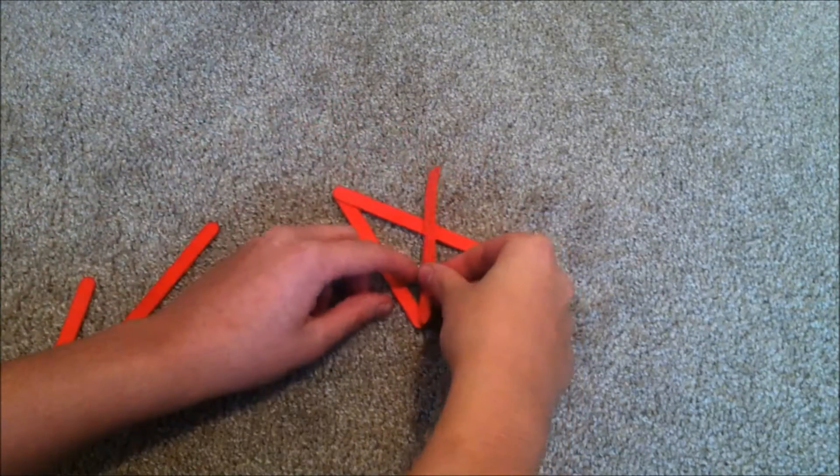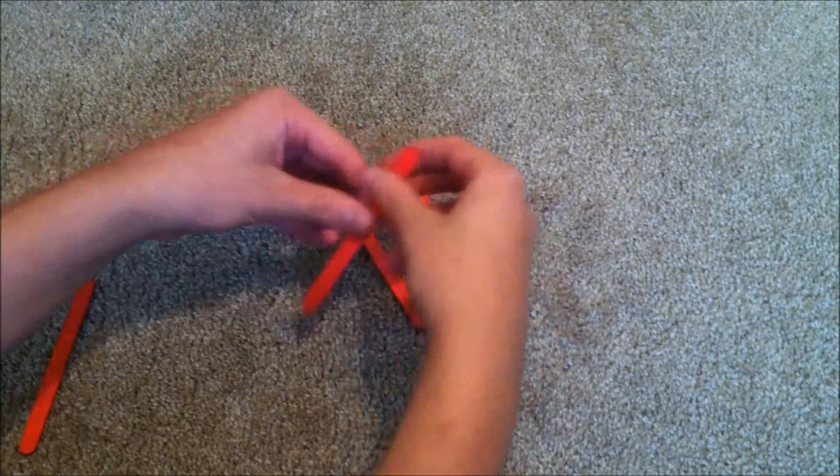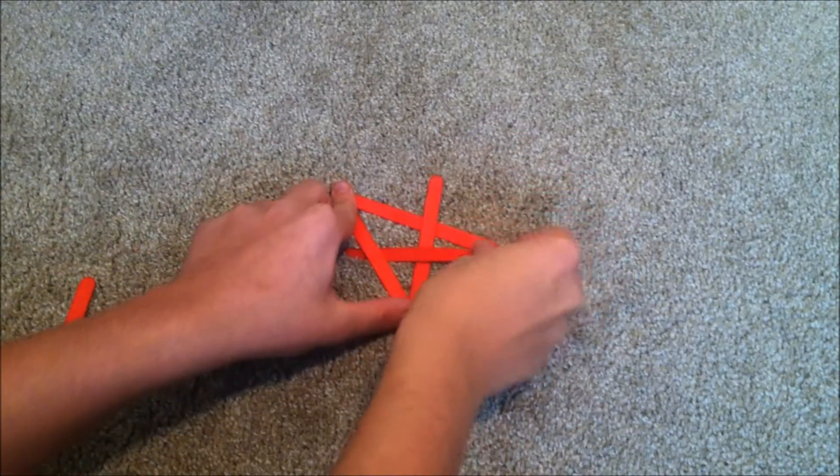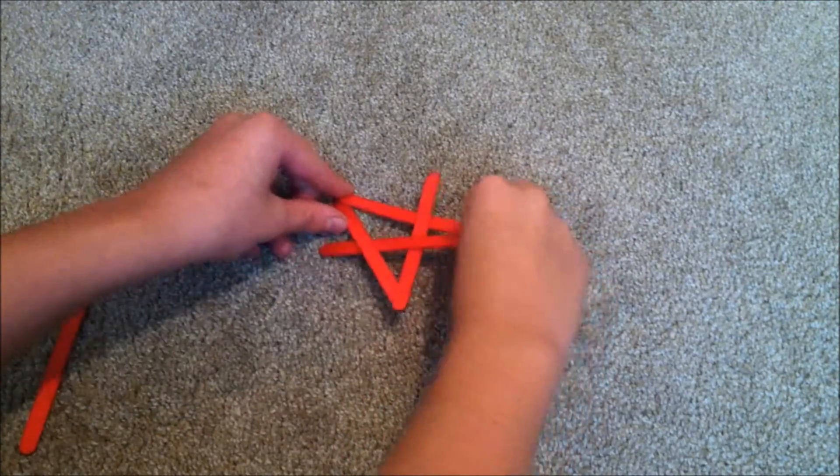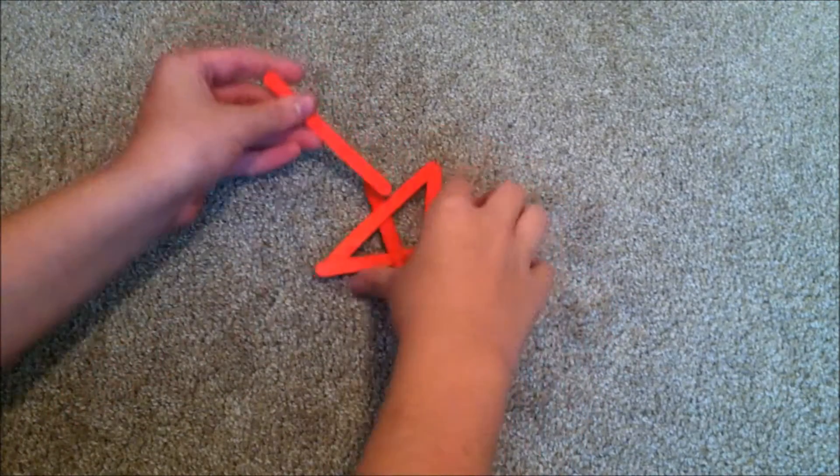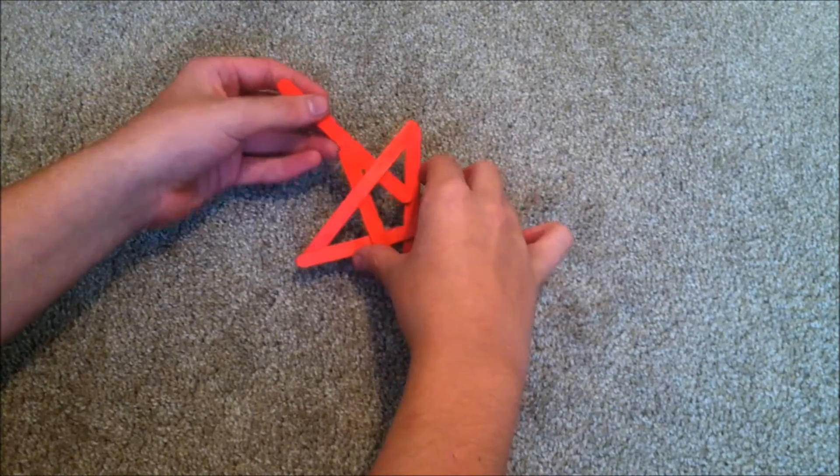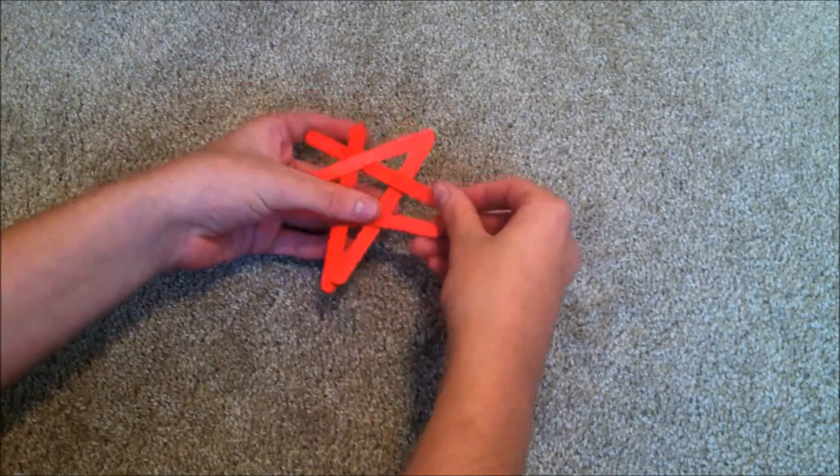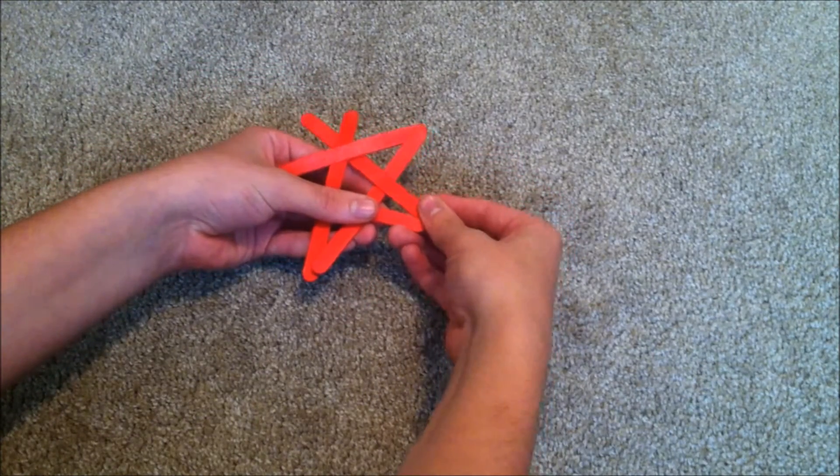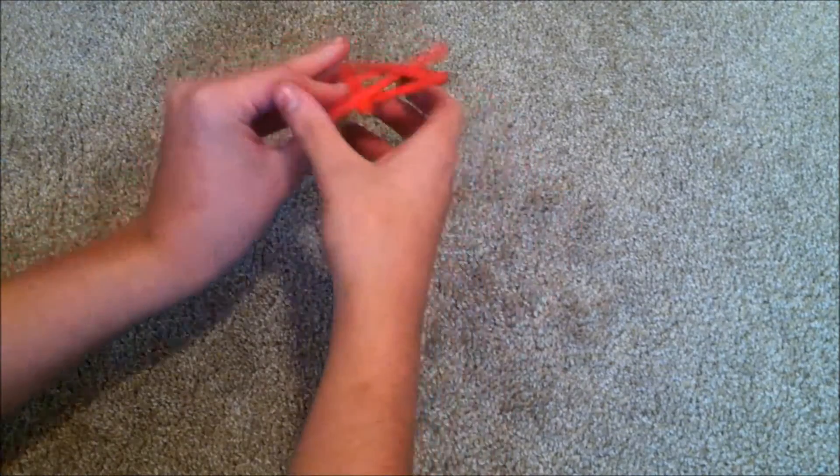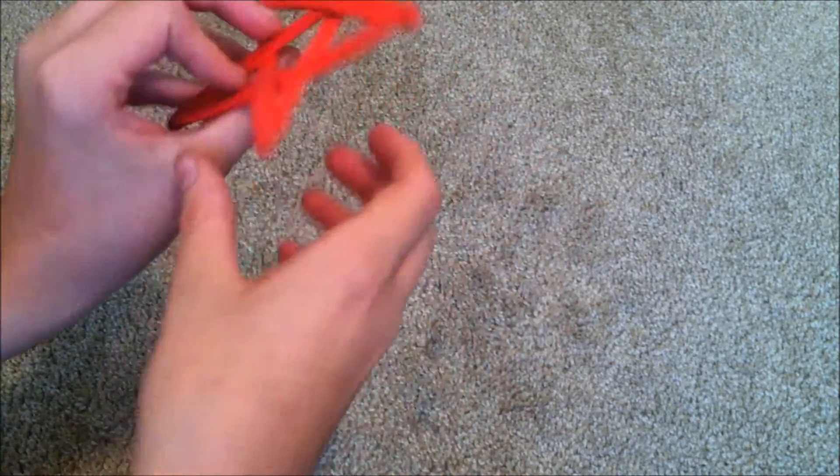This next one is a variation of the boomerang called the Five Point Throwing Star. Assemble the boomerang just like you did before, but with a slightly skinnier V. Then slide this stick between these ones and around the side one so it looks just like a five-point throwing star.